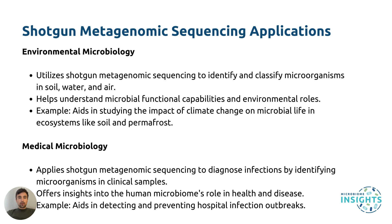In environmental microbiology, shotgun metagenomic sequencing can identify and classify microorganisms in soil, water, and air. For example, this method is used to study the impact of climate change on microbial communities in ecosystems like soil and even permafrost. These microbiomes are critical for nitrogen fixation and supply of nutrients to plants, and therefore it's important to know how they change with the environment.